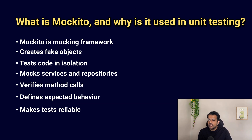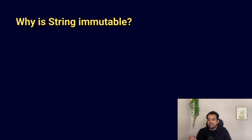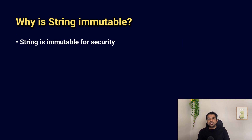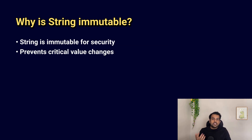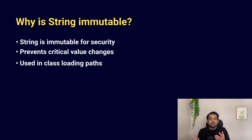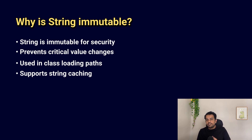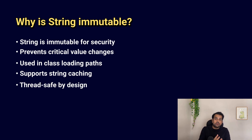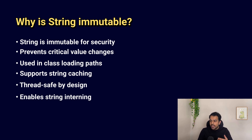The next question is from core Java: why is String immutable? String is immutable for security reasons — it prevents someone from changing values used in class loading or file paths. It also enables caching and makes String thread safe since the value never changes. Immutability improves both performance and stability.